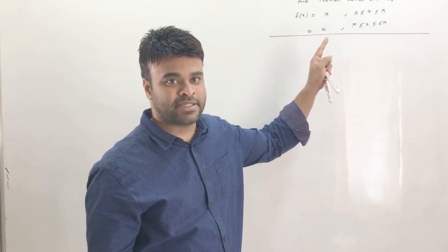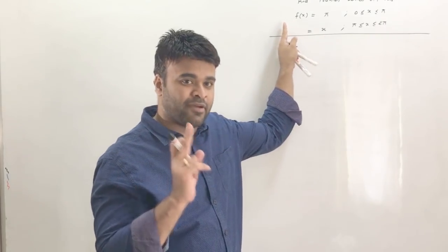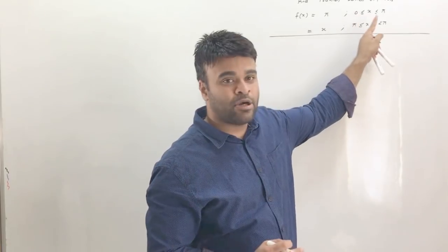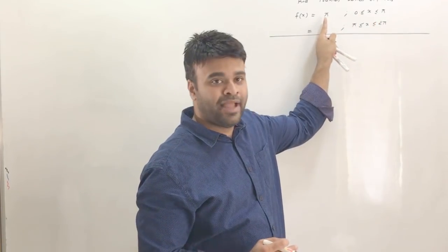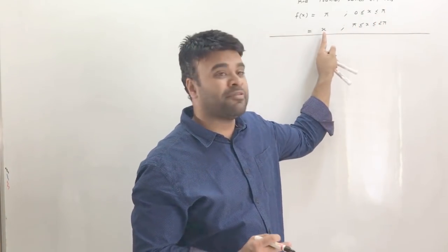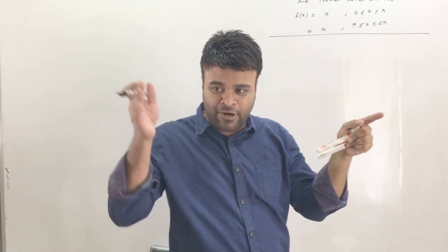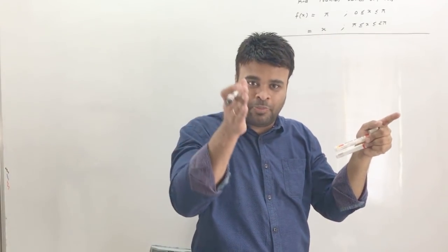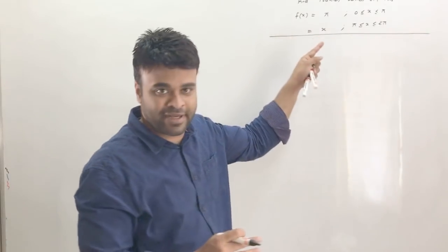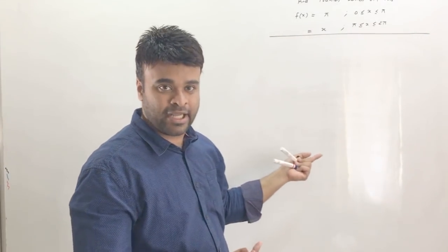Now let's look at this problem. The question asks you to find the Fourier series where f(x) is given as a piecewise function: from 0 to π the value of f(x) is π, and from π to 2π the value of f(x) is x. So f(x) ranges over 0 to 2π.